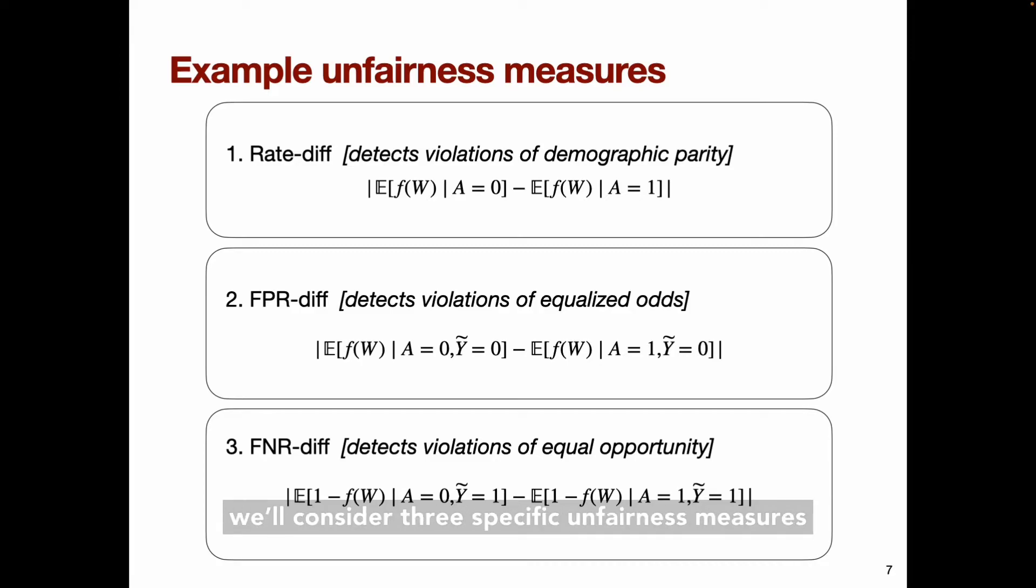For the sake of concreteness, in our results we'll consider three specific unfairness measures that can be expressed in this form. The first measure is the rate difference or rate disparity, which, for example, can detect violations of demographic parity. The other two measures are the generalized false positive and false negative rate differences, in case Y tilde is binary. These together can detect violations of equalized odds, which requires equal error rates for the two groups. And on its own, the false negative rate difference can detect violations of equal opportunity, which requires equal false negative rates for the two groups. All three of these unfairness measures, again, can be expressed in the general form given on the previous slide.